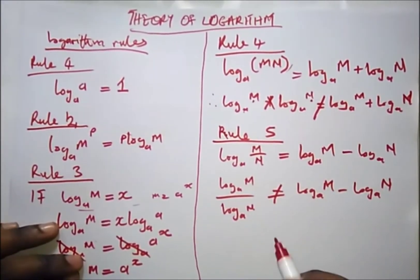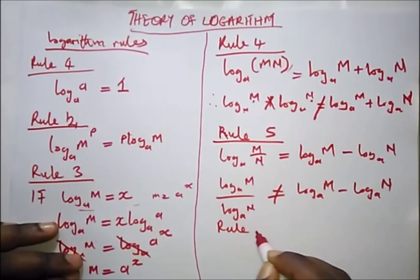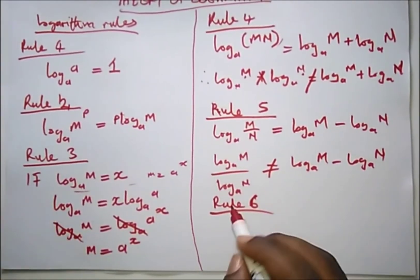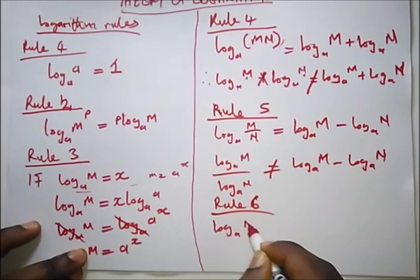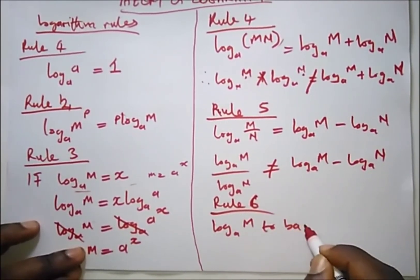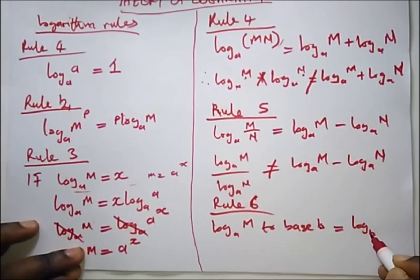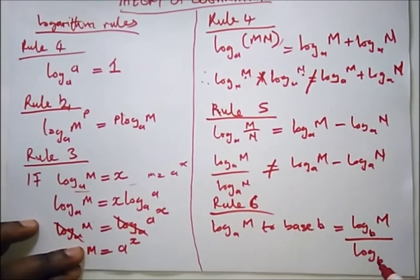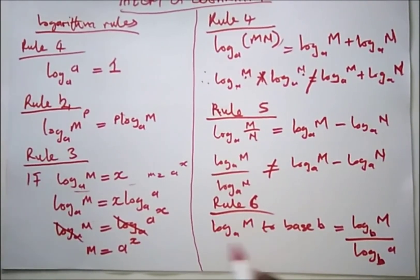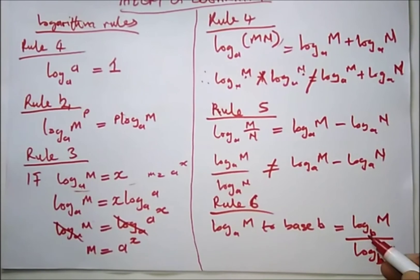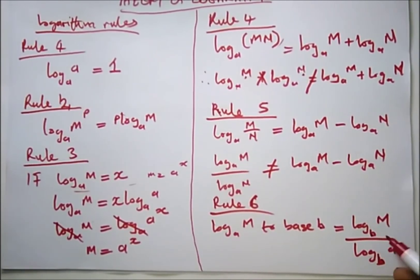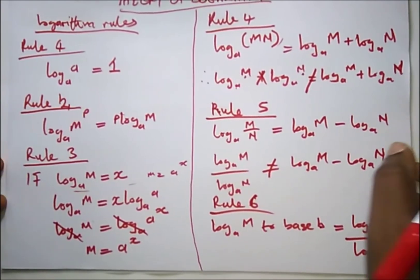And our sixth rule, rule number 6, says log base a of m—to change it to base b—would be equal to log base b of m over log base b of a. When you are told to change this to a particular base, all you need to do is change the base to b, divide both sides. This would come as the numerator and your base will be the denominator.